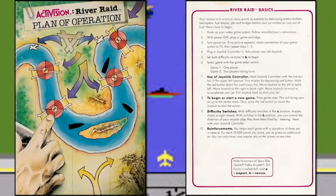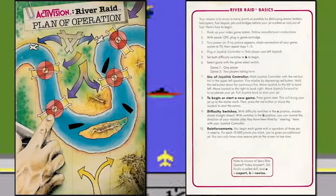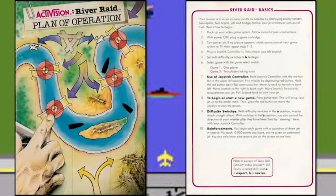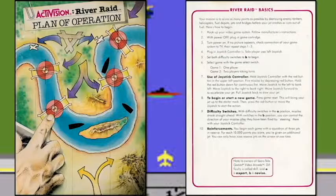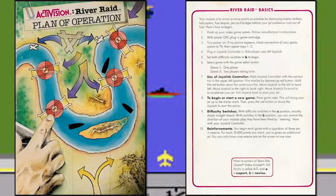Use of the joystick controller: make the red button in the upper left position. If you are left-handed — well, we can't accommodate you. Turn it around or something, figure it out. You're going to fire missiles by depressing the red button. Hold the red button down for continuous fire. Move the joystick to the left to bank left, move it to the right to bank right. Unless you have an emulator for your computer — then you can mess that up and put those directions every which way.